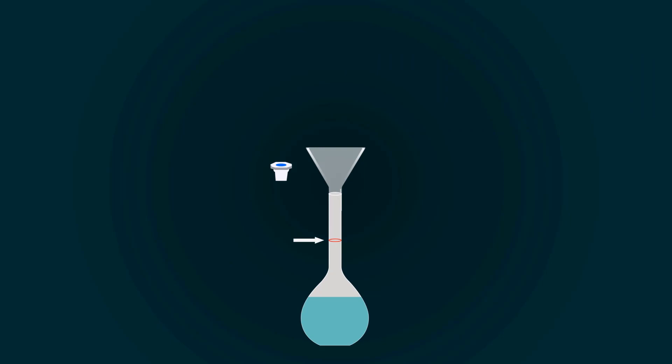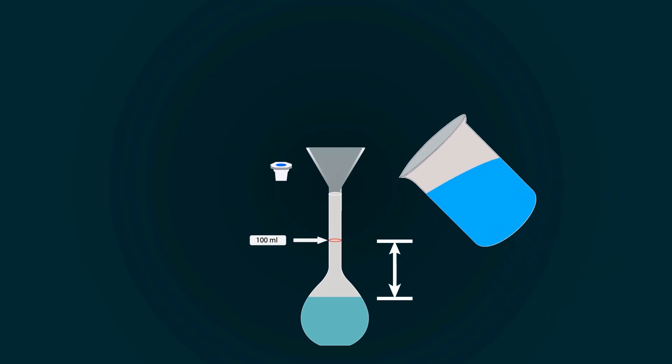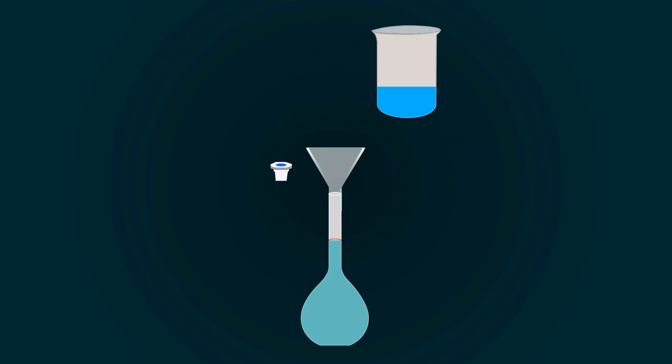You have to fill the volumetric flask up to the 100 milliliters point. For that, you have to add more distilled water. So, take more distilled water into an empty beaker and start pouring it into the volumetric flask.